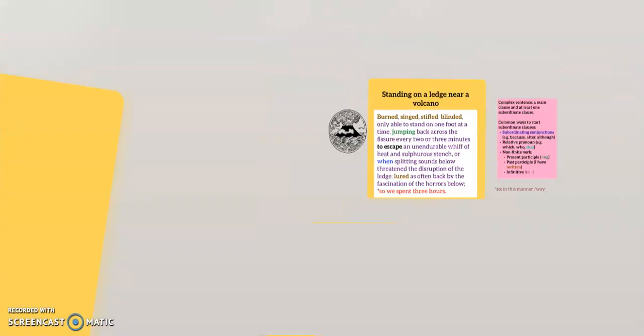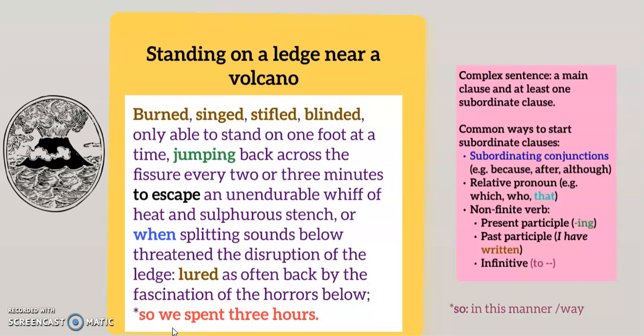Our final example is non-fiction and it's from the Hawaiian Archipelago by Isabella L. Bird. Isabella Bird was a 19th century explorer, writer and photographer — she was the first woman to be elected Fellow of the Royal Geographical Society. In this extract she describes the experience of standing on a ledge near a volcano and what she sees below in a fissure, which is an opening in the ground. Step one: read the sentence, pausing at the punctuation. 'Burned, singed, stifled, blinded, only able to stand on one foot at a time. Jumping back across the fissure every two or three minutes to escape an unendurable whiff of heat and sulphurous stench. Or when spitting sounds below threatened the disruption of the ledge. Lured as often back by the fascination of the horrors below. So we spent three hours.'